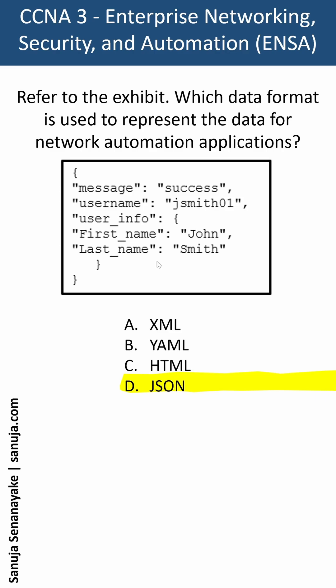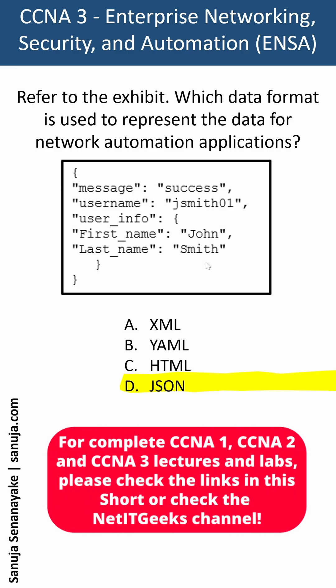In XML, the data is enclosed within a related set of tags, as opposed to having this structure. In YAML, the data are known as objects and key-value pairs, and the key-value pairs are separated by a colon without the use of quotation marks. Because this code has quotation marks, braces, and is structured this way, we know it is JSON. So that's the answer to this question.